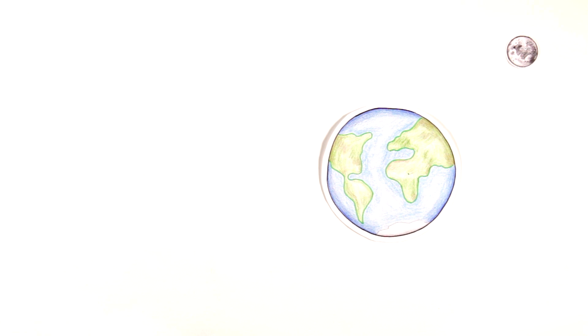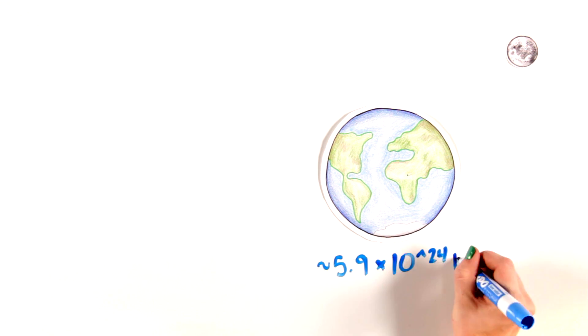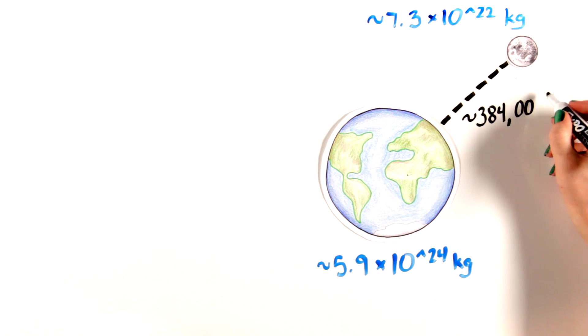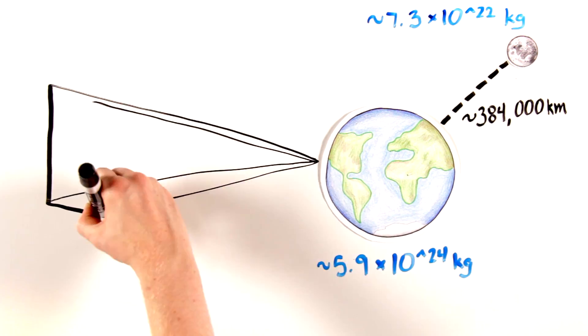Gravity affects every object near Earth, but interestingly, it does not affect them with the same strength. Gravity's strength between any two objects is dependent on the mass of each of the objects and the distance by which they are separated.